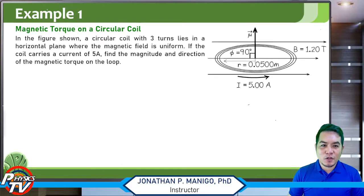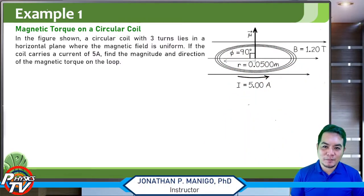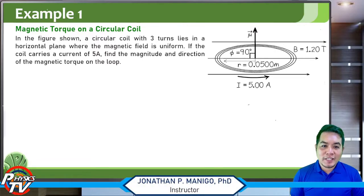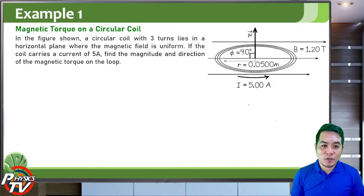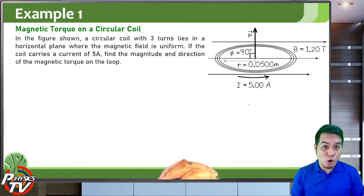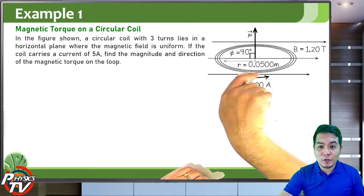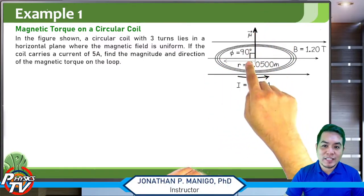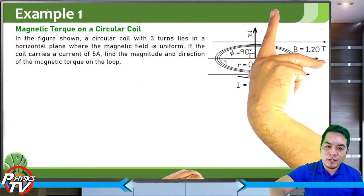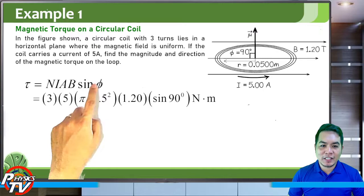Let's have an example: magnetic torque on a circular coil. You have a circular coil with three turns lying on a horizontal plane where the magnetic field is uniform. The coil carries a current of five amperes. Find the magnitude and direction of the magnetic torque on the loop. The area vector — which is also the direction of the magnetic dipole moment — is perpendicular to the surface of the loop. Since the magnetic field lies on the plane of the loop, the angle between the magnetic field and the area vector is 90 degrees. Using the right-hand rule for μ cross B, the direction of the torque is into the page.